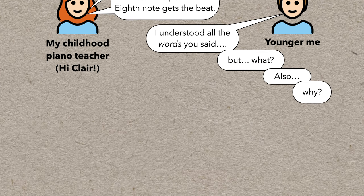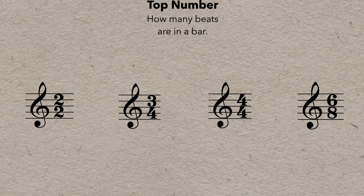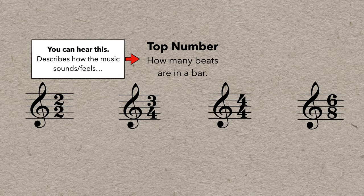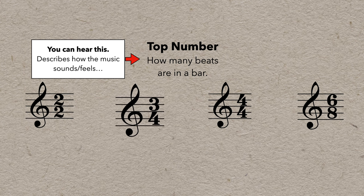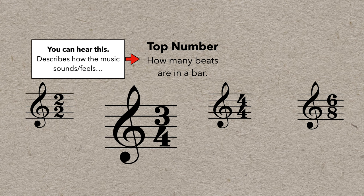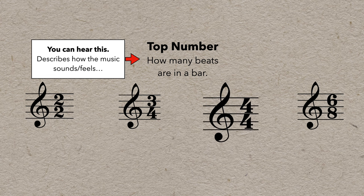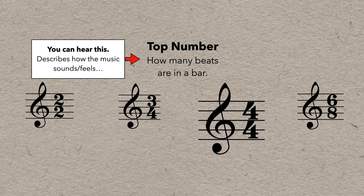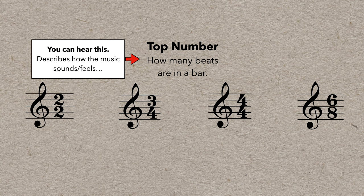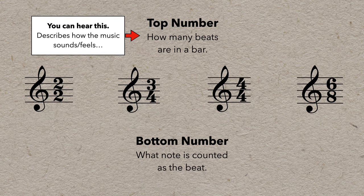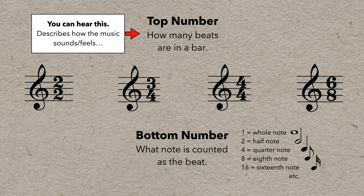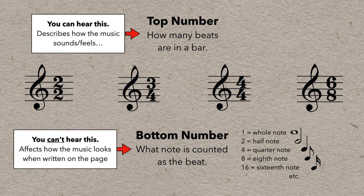But time signatures make a bit more sense when you realize that the top number can be heard in the music, and describes how the music feels. You can hear the difference between music that's in 3, or in 4. But because the bottom number defines what kind of note is to be counted as the beat, you can't actually hear it, because it only affects how the music looks when the composer writes it down.